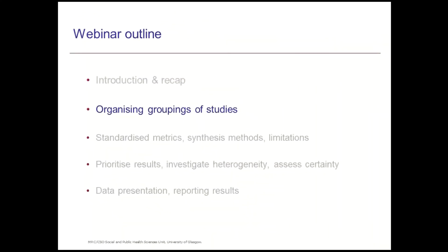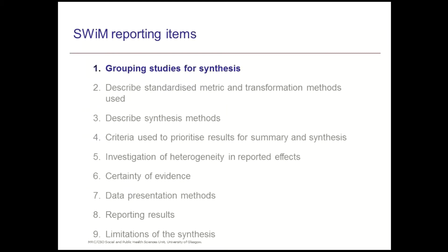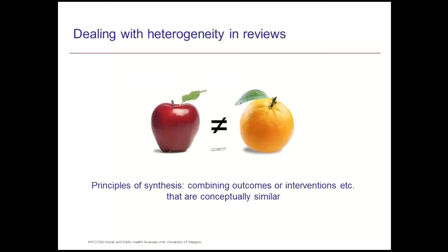The first section I'm going to talk about is reporting and organising groupings of the studies. This refers to the first item of the SWIM reporting guidance: grouping studies for the synthesis. What this item is about is how we deal with heterogeneity in reviews — how are we going to group these studies together?